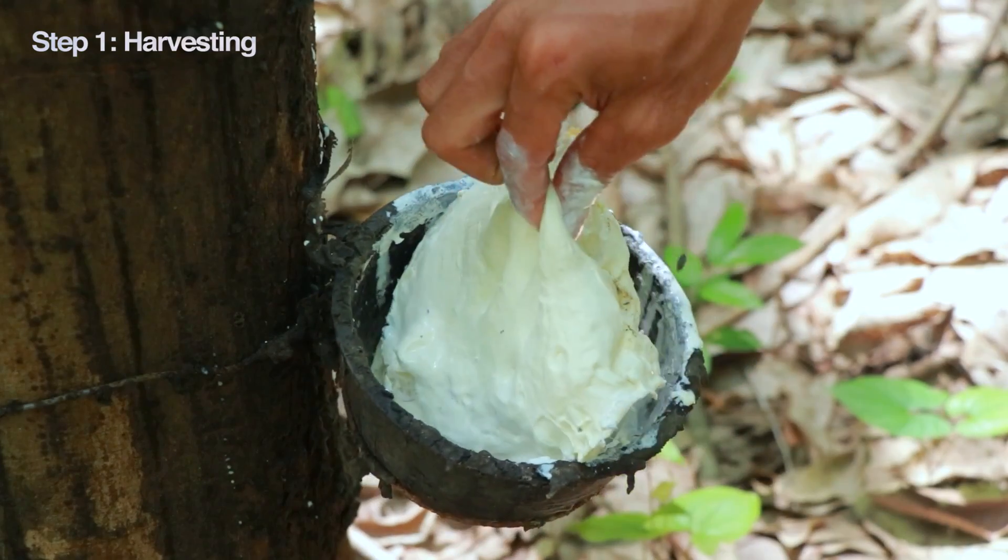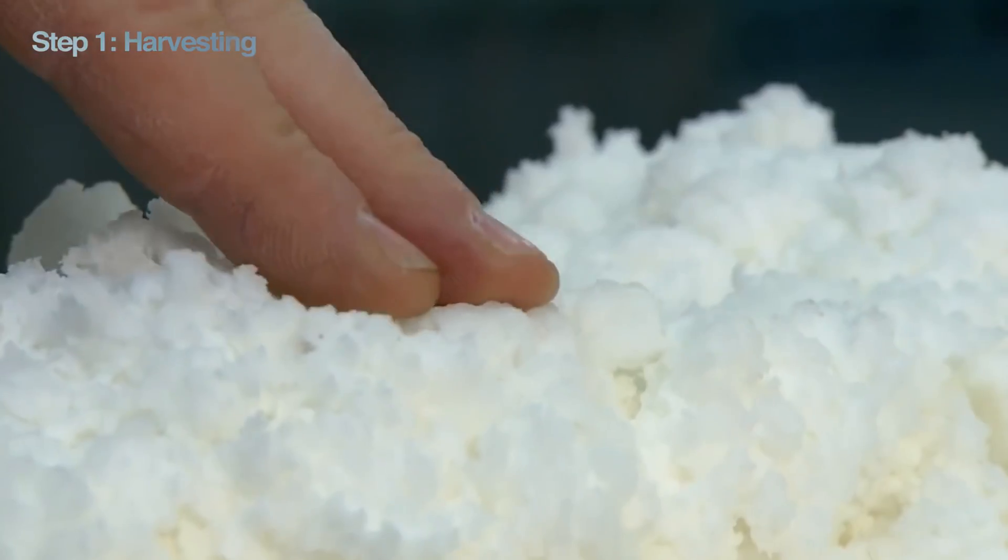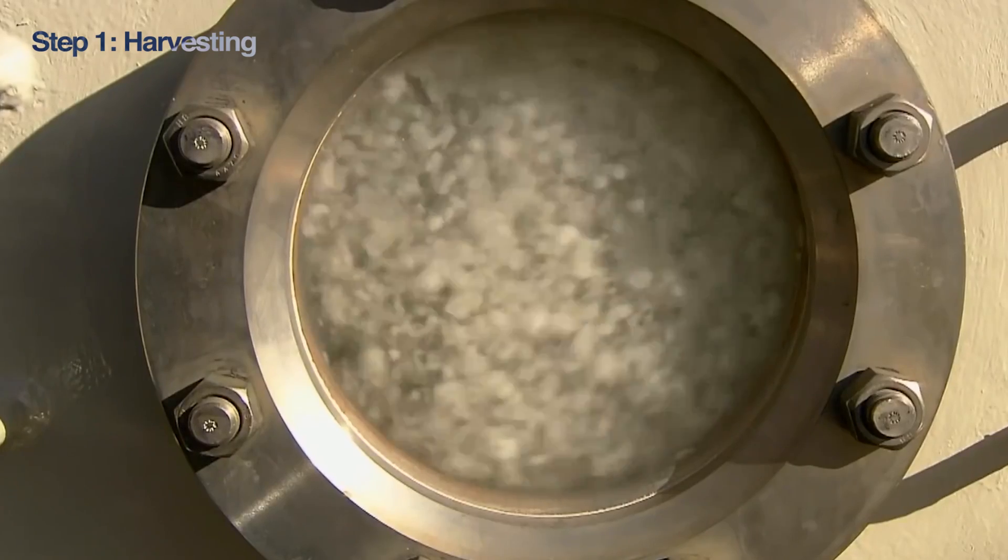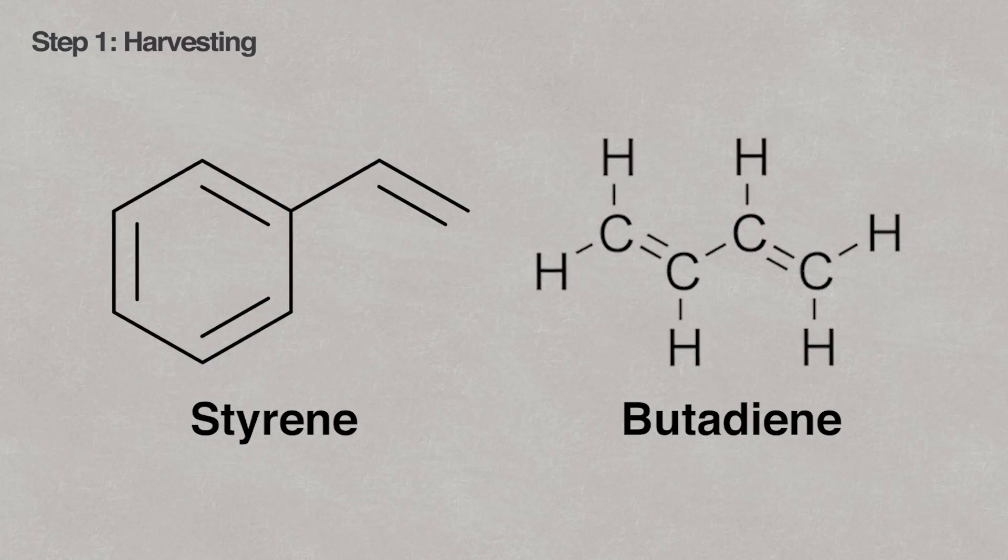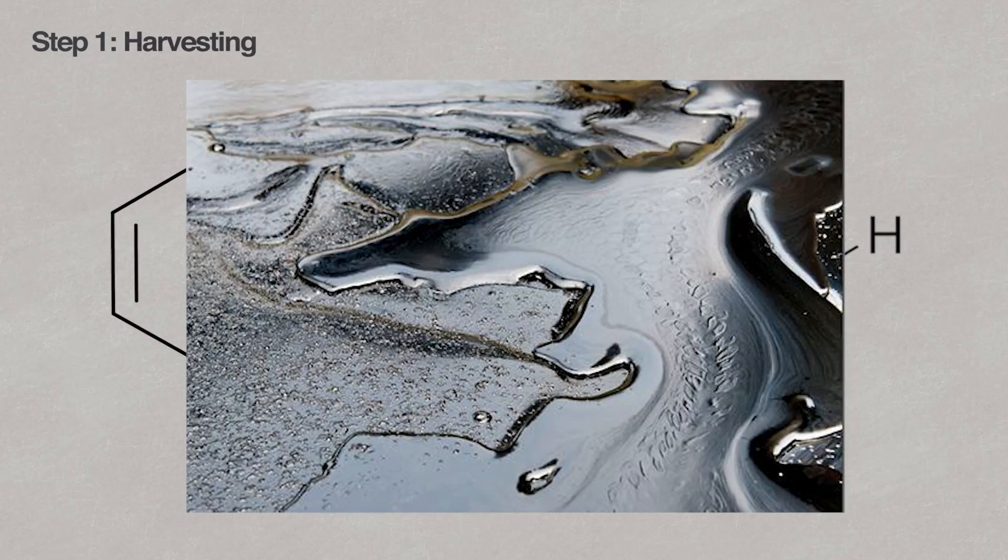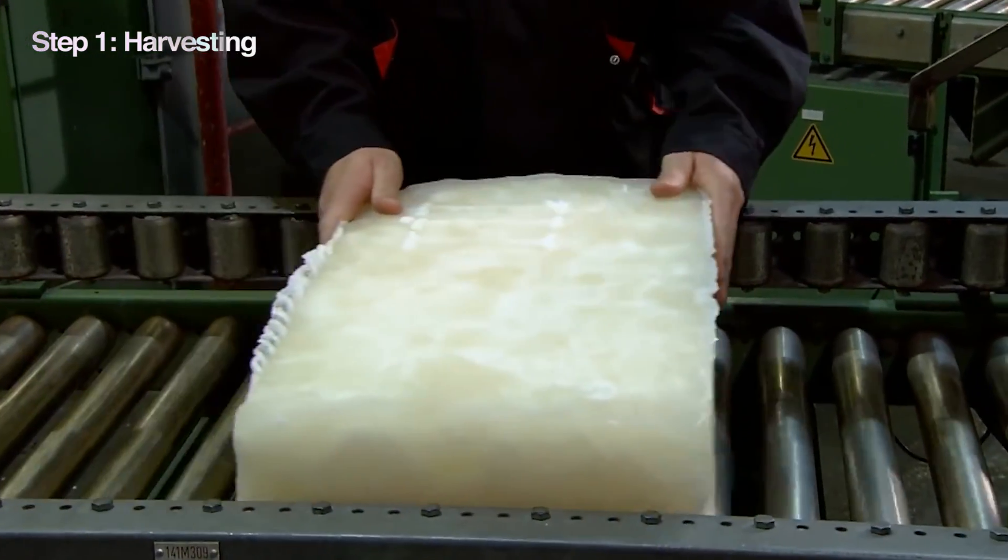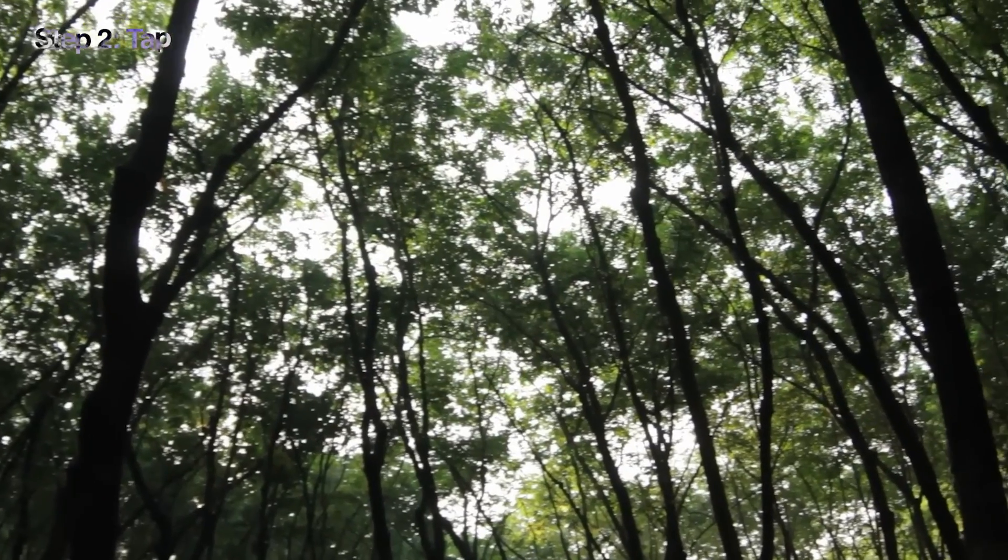So we know all about where natural latex comes from, but what about the other kind? Let's enter the world of synthetic rubber. Synthetic rubber is a human-made version that's cooked up in a lab. There are two main ingredients: styrene and butadiene, and both come from a precious source of energy—petroleum. But just like natural latex has different variations, synthetic rubber can be customized too. Scientists can create types of rubber that resist chemicals and high temperatures.